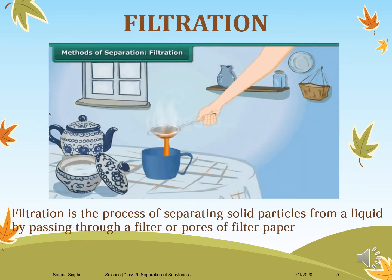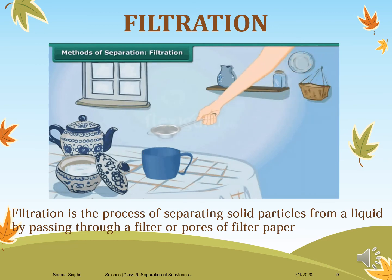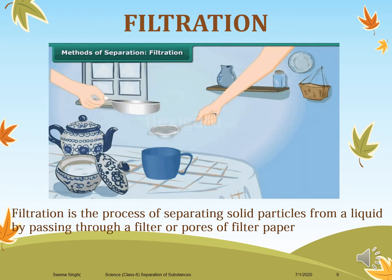Here comes filtration. Filtration is the process of separating solid particles from a liquid by passing it through a filter, pores, or filter paper. A simple filtration process we see at home is the preparation of tea. After preparing the tea, when we pour it into a cup we use a strainer — the impurities are retained on the strainer and we get the tea in the cup. The separating particles are solid, so we use a filter or filter paper. This process is majorly used to purify liquid mixtures.